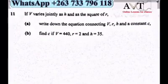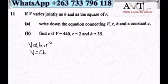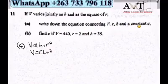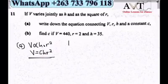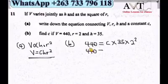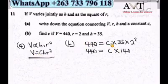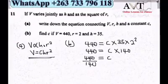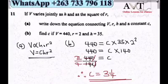Number 11: V varies jointly as h and the square of r. This means V equals c times h times r squared, where c is the constant. Write the equation connecting V, r, h and constant c as V equals chr squared. For part B, substitute V equals 440, h equals 35 and r equals 2: solving gives c equals 22 over 7, which is approximately 3 and one seventh.